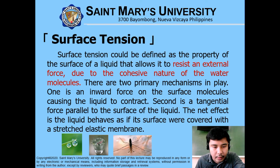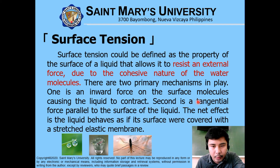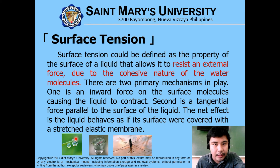The last topic is surface tension. Surface tension is the property of a liquid surface that allows it to resist external force due to the cohesive nature of water molecules. Two primary mechanisms are at play: an inward force on surface molecules causing the liquid to contract, and a tangential force parallel to the liquid surface. The net effect is that the liquid behaves as if covered with a stretched elastic membrane. Surface tension explains why raindrops are spherical and allows insects, denser than water, to float on the water surface.